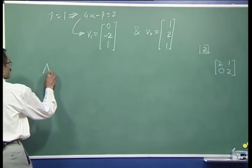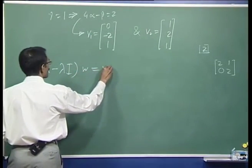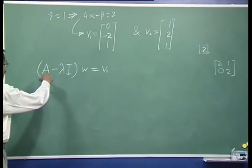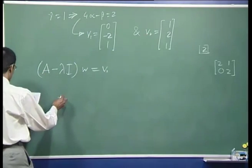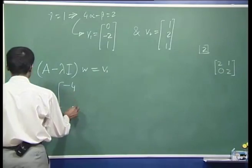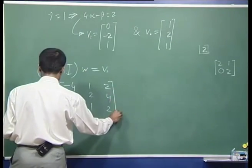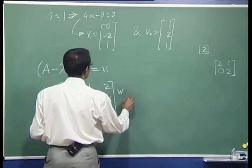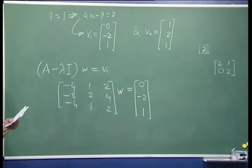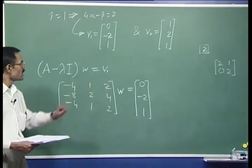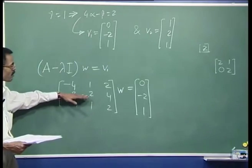To begin, suppose we want this eigenvector to admit a generalized eigenvector and try to find it. The generalized eigenvector w will satisfy A minus lambda I times w equals v. Whatever we wrote as lambda I minus A — that matrix is actually its negative. So I am reproducing that negative matrix here.